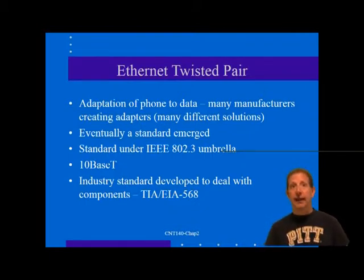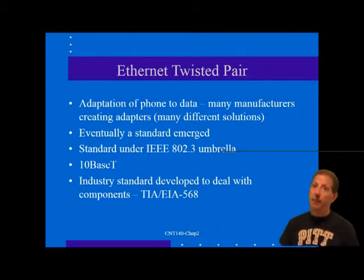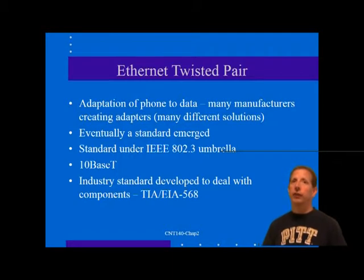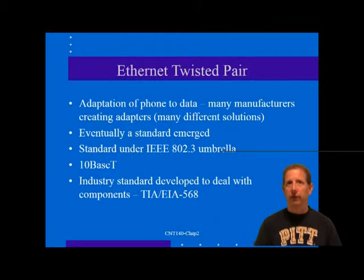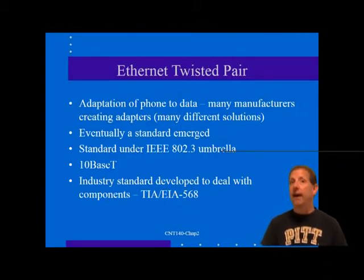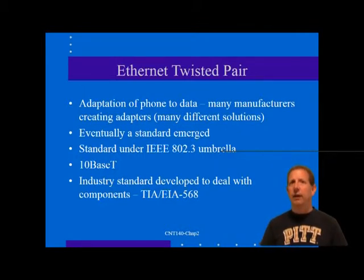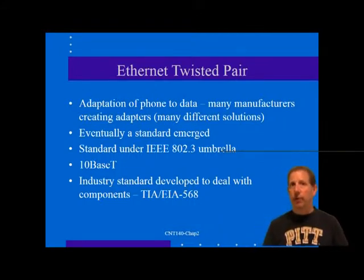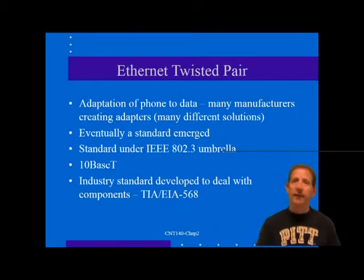10BaseT has been so successful that it virtually eliminated the installation of new 10Base5 and 10Base2 networks. The need to specify a system of universal telecommunications cabling for proper operation of 10BaseT gave rise to a series of new cable, wiring, and component standards, eventually resulting in the industry standard called EIA/TIA 568. That original 10 megabit Ethernet is beginning to seem very slow — Ethernet networking has jumped first to 100 megabits per second, then to a gigabit, and now even 10 gigabits per second over twisted pair.